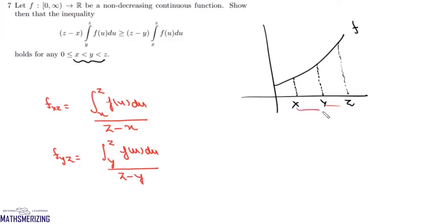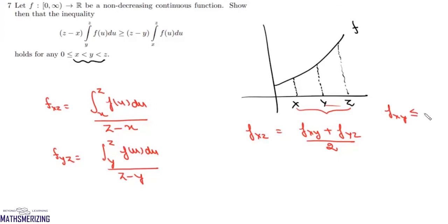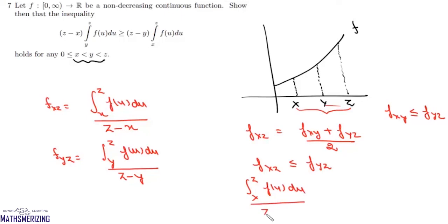Now the average value of f over [x, z] can be written as the average value over [x, y] plus the average value over [y, z], divided by two. Since f is an increasing function, the average over [x, y] is always less than or equal to the average over [y, z]. So the average over [x, z] is always less than or equal to the average over [y, z]. Putting in the integral expressions: (1/(z−x)) ∫[x to z] f(u) du ≤ (1/(z−y)) ∫[y to z] f(u) du.